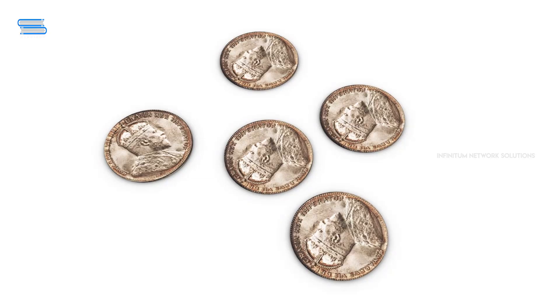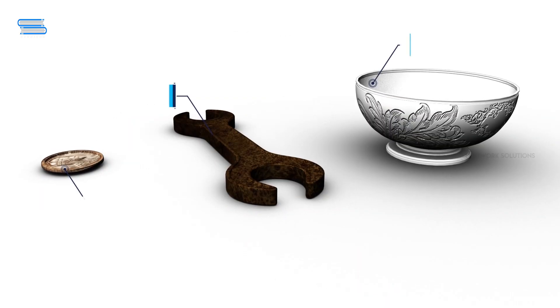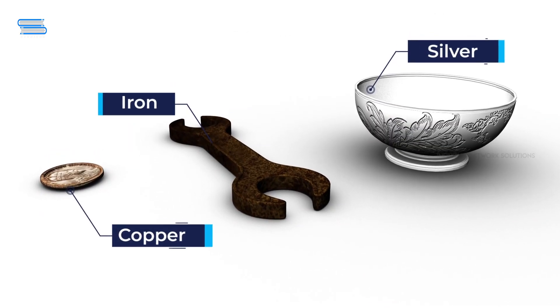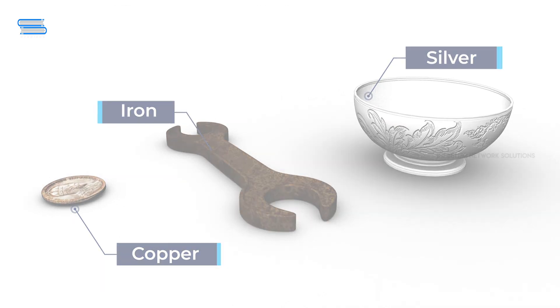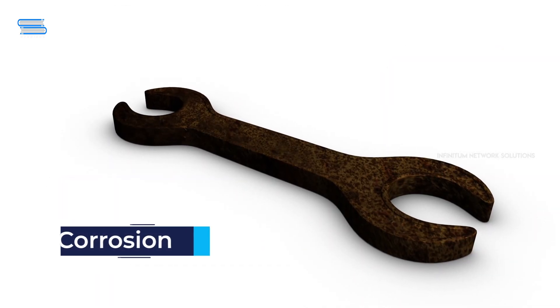Corrosion. Have you ever wondered why the colors of some metals like iron, silver, and copper gradually change with time? This is caused due to corrosion.